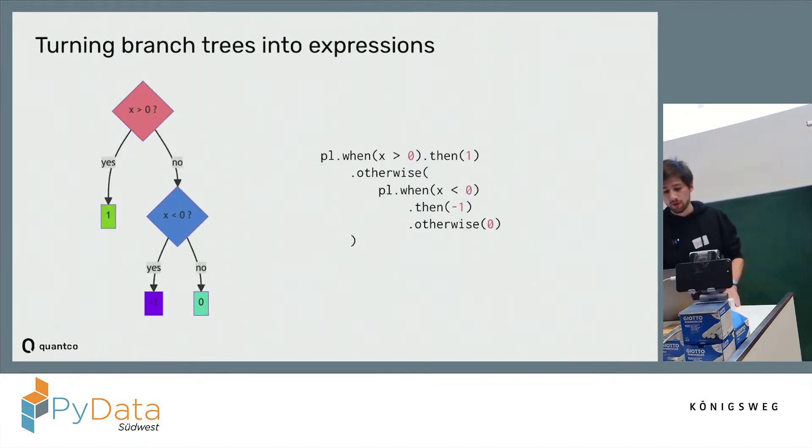This is pretty straightforward. We copy this condition here inside as the argument for this when function call, the left side goes in the argument for the then function call, and the right side will be the otherwise call.